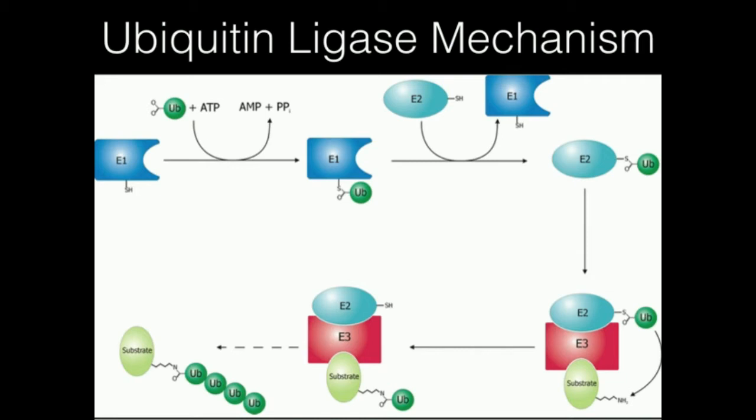Ubiquitin ligase technically is this E3, but in order to attach ubiquitin onto the damaged protein, we're actually going to need three separate proteins that are all part of the ubiquitination mechanism, but only ubiquitin ligase is E3. The other two are obviously going to be E2 and E1. And so what we'll see right now is how ubiquitin gets attached onto the substrate, which is the damaged protein.